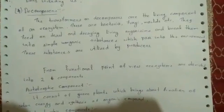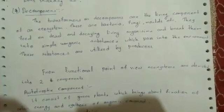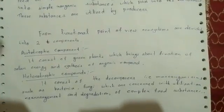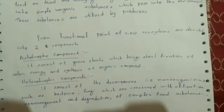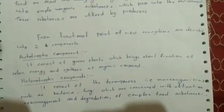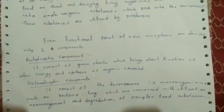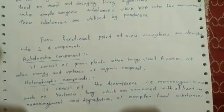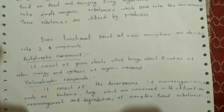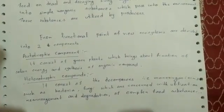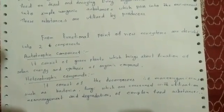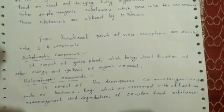From a functional point of view, ecosystems are divided into two components: the autotrophic component and the heterotrophic component. The autotrophic component consists of green plants, which bring about fixation of solar energy and synthesis of organic compounds. The heterotrophic component consists of decomposers, that is, microorganisms such as bacteria and fungi, which are concerned with the utilization and degradation of complex food substances.